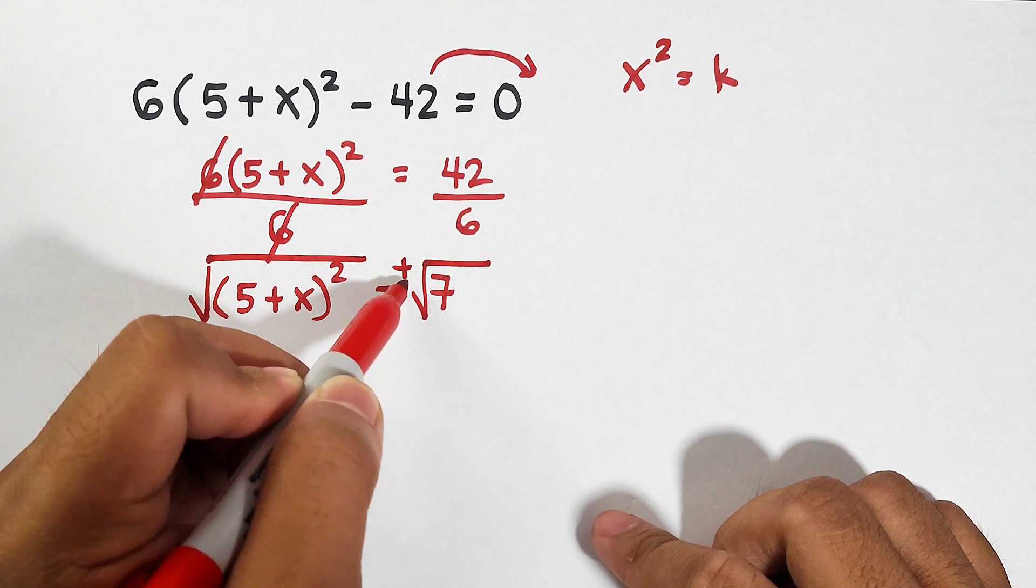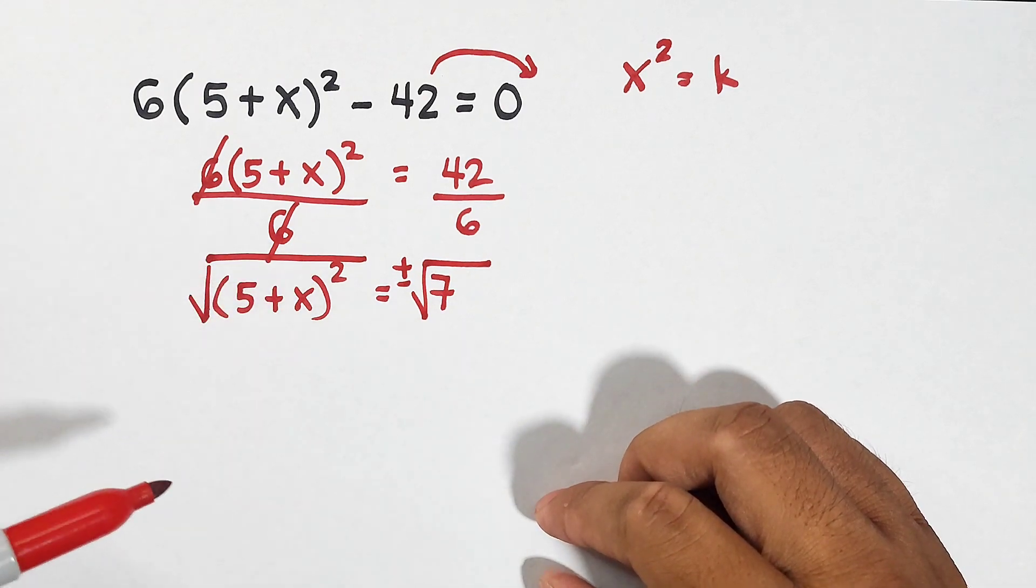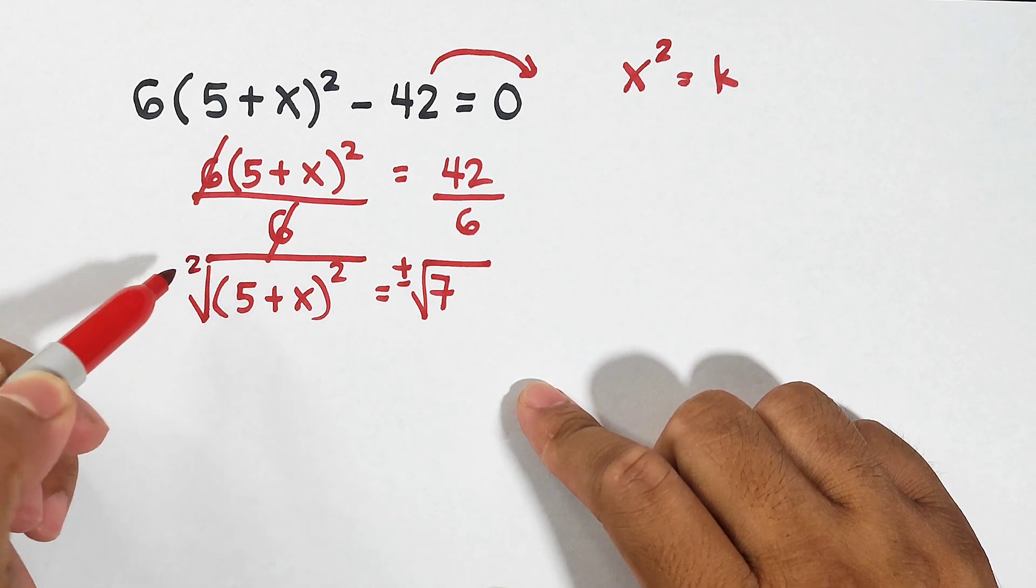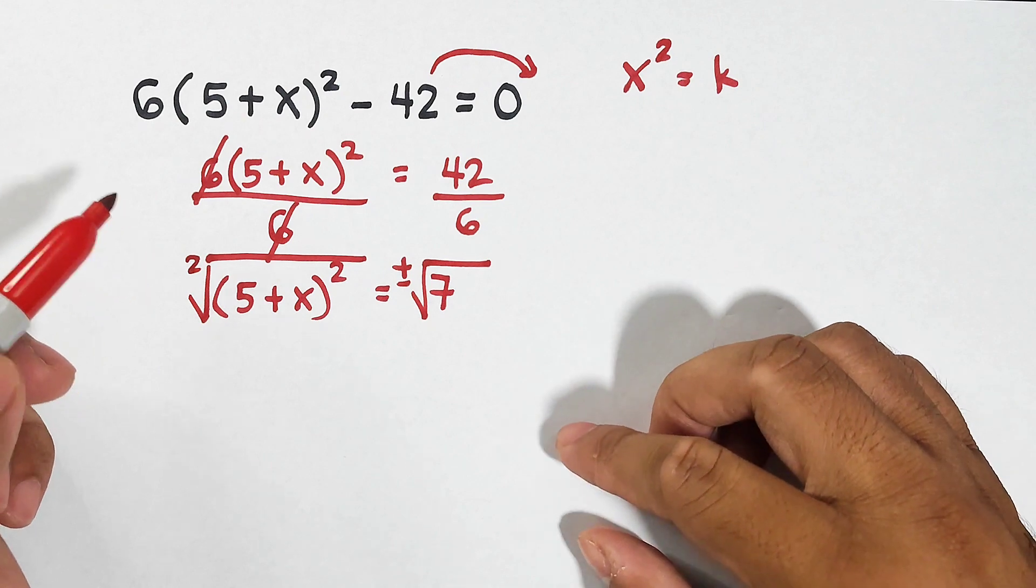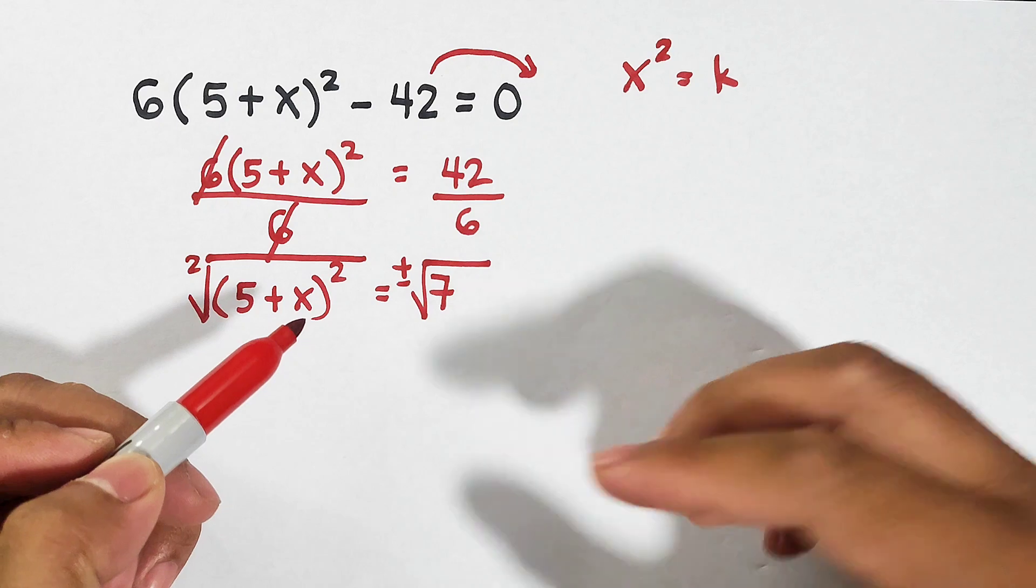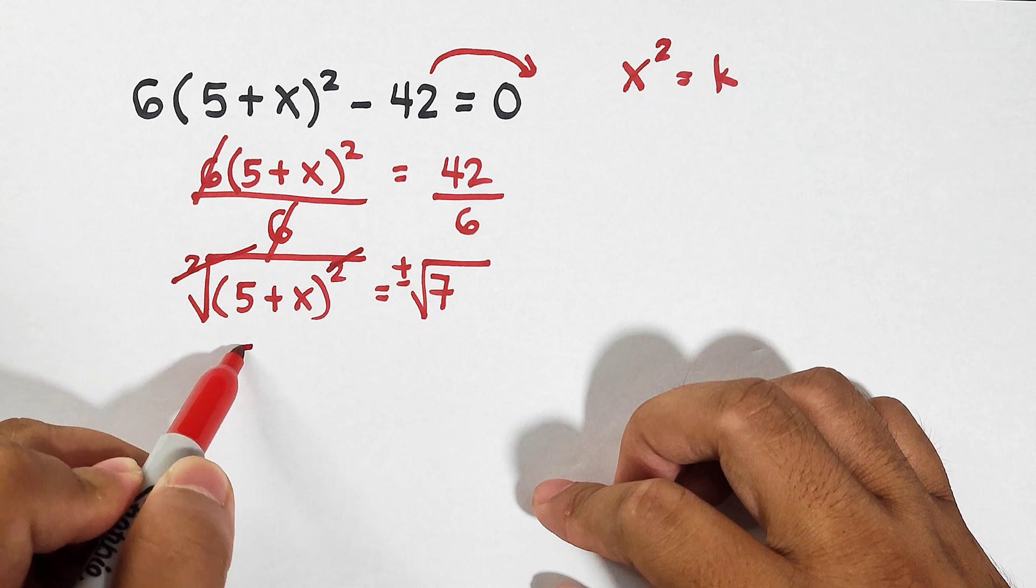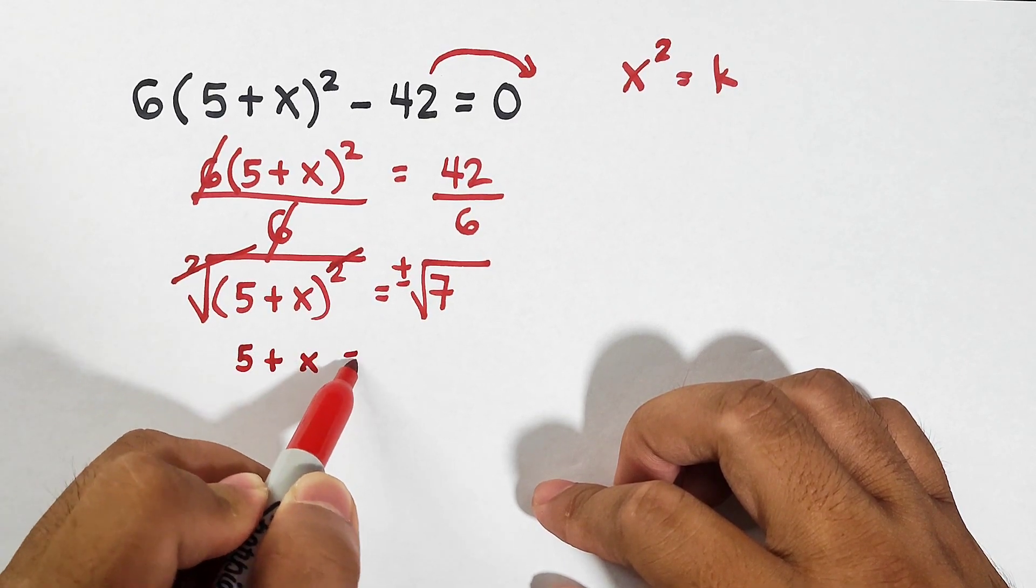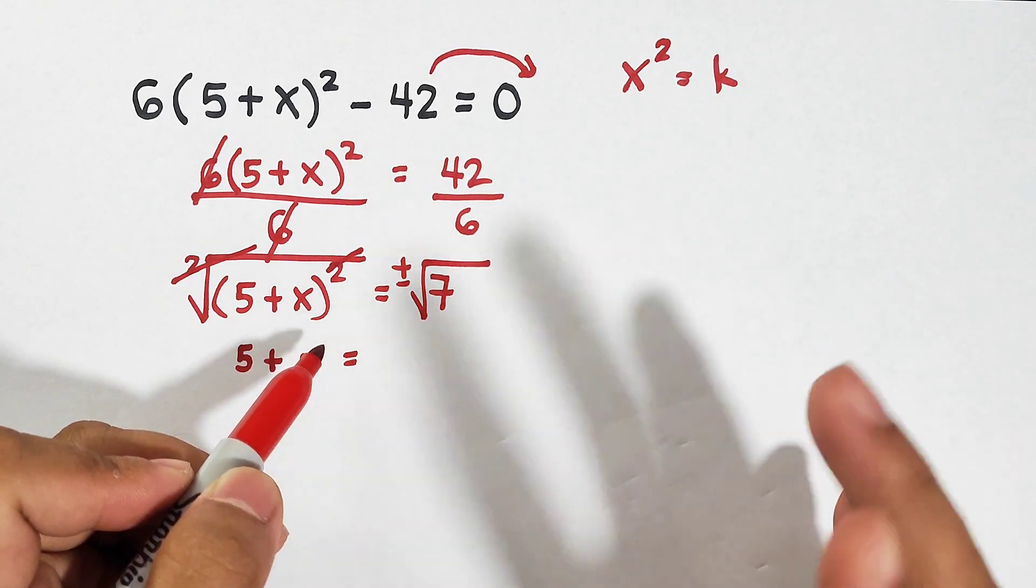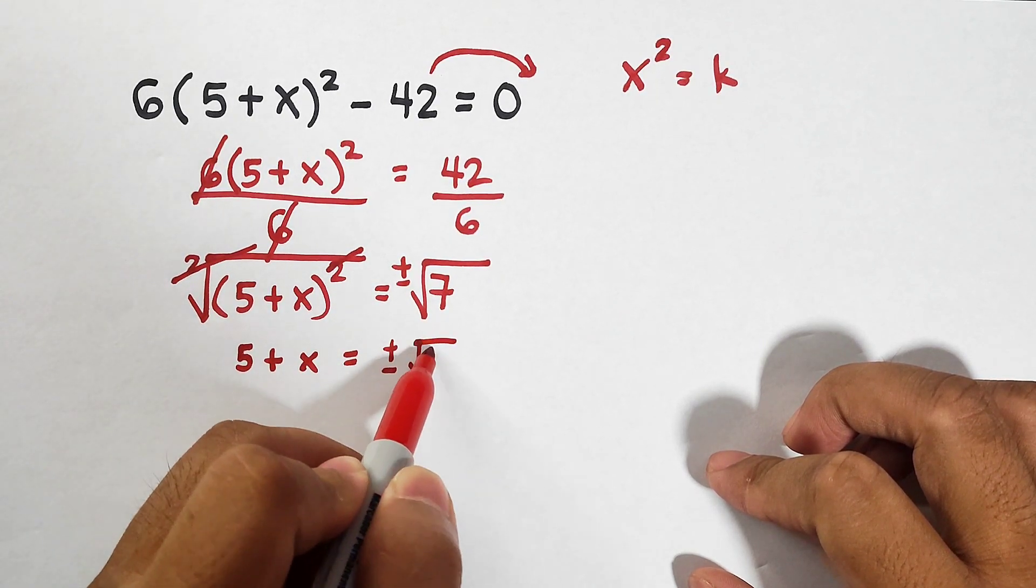Square roots. And don't forget the positive and negative. By the way, I saw in the comment section, why can we cancel out the radical and the power of 2? We have an invisible index of 2, and there's a property that if the index and exponent of the radical are equal, we can simply cancel it out. So what we have here is 5 plus x is equal to, since 7 is not a perfect square and has no perfect square factors, it will remain as positive negative square root of 7.